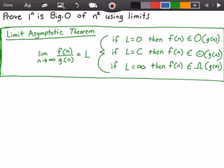Hey guys, and welcome to this video on Big-O using limits. So here we want to prove that 1 to the power of n is Big-O of n squared using limits.